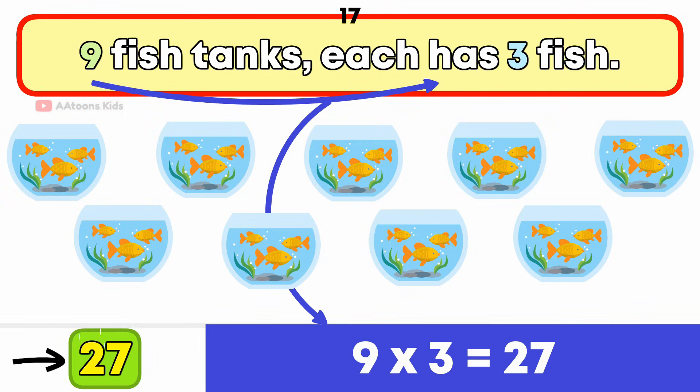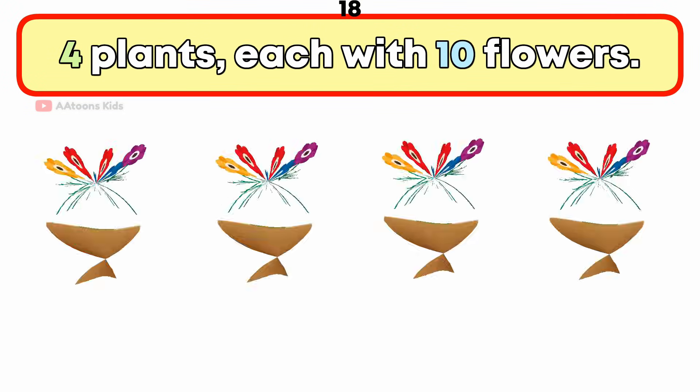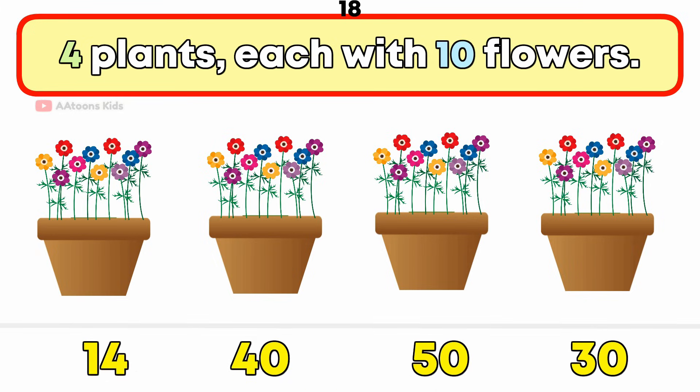4 plants each with 10 flowers. How many flowers are there in total? 40 flowers.